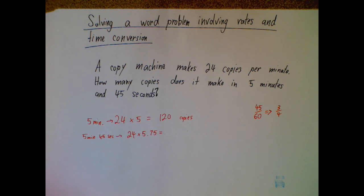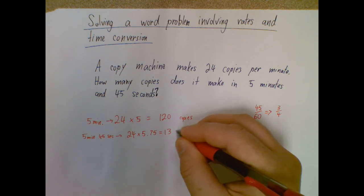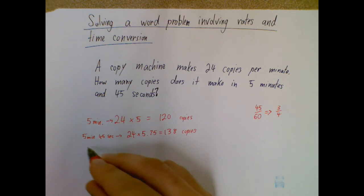But like I said, with this one in particular, there is a lot of different ways you could do it. So anyway, we ended up with 18. So when I add that in, I find out this is 138 copies in five minutes and 45 seconds.